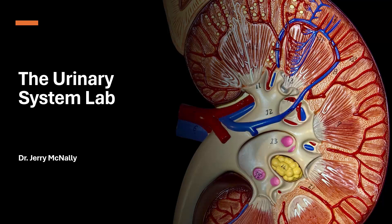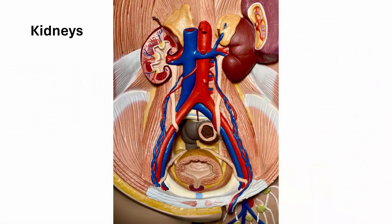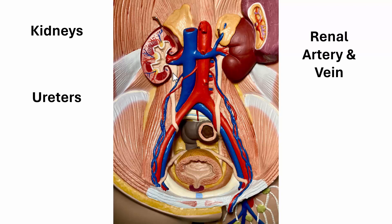In this video, we're going to look at the urinary system lab. The urinary system consists of two kidneys, a renal artery and renal vein for each kidney. The renal artery comes off of the aorta, and the renal vein enters into the inferior vena cava. Coming out of the two kidneys is a ureter, and they lead down to the urinary bladder.